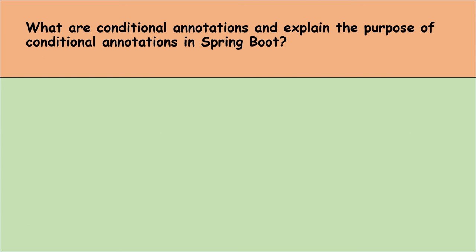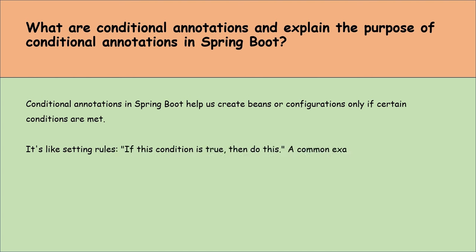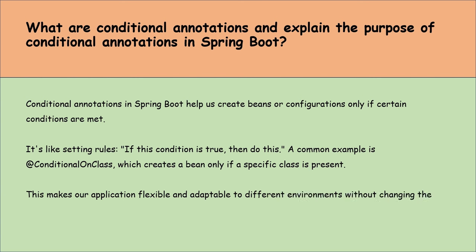What are conditional annotations and what is their purpose in Spring Boot? Conditional annotations in Spring Boot help us create beans or configurations only if certain conditions are met — it's like setting rules: if this condition is true, then do this. A common example is the @ConditionalOnClass annotation, which creates a bean only if a specific class is present. This makes our application flexible and adaptable to different environments without changing the code, enhancing modularity and efficiency.